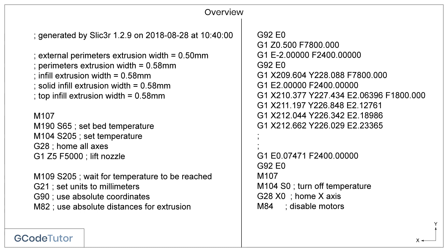G-code is pretty much the same and universal across all machines, but each machine has a favoured way of reading it, so I've printed it out here for the RepRap type of printer. The first line tells us it was generated by Slicer and our date and time. At the very start of that line is a semicolon, which means we're adding an operator's note — so a human can read it and understand what is going on. This note is purely for you, so you can understand what each G-code and M-code means.